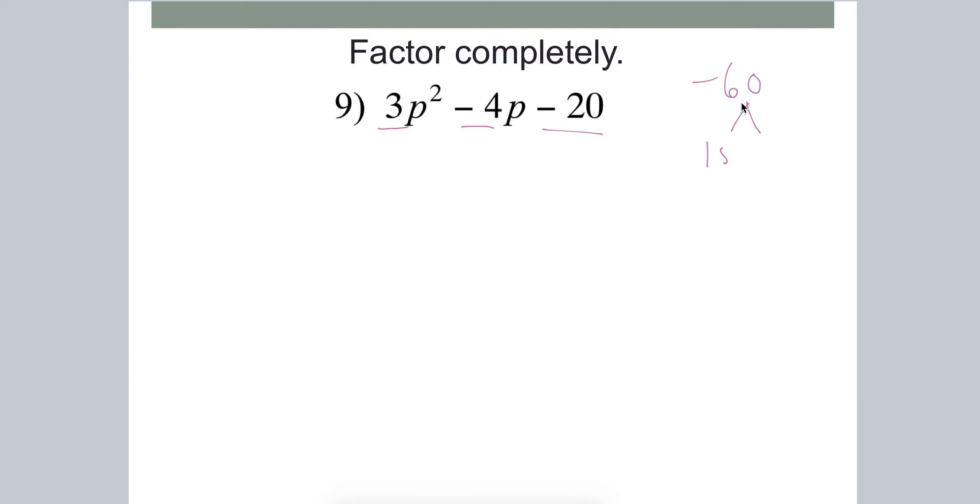So now let's try 10 and negative 6. Well, those multiply to negative 60, but they add to a positive 4. We want a negative 4. So then simply switch the signs. So it should be a negative 10 and a positive 6.